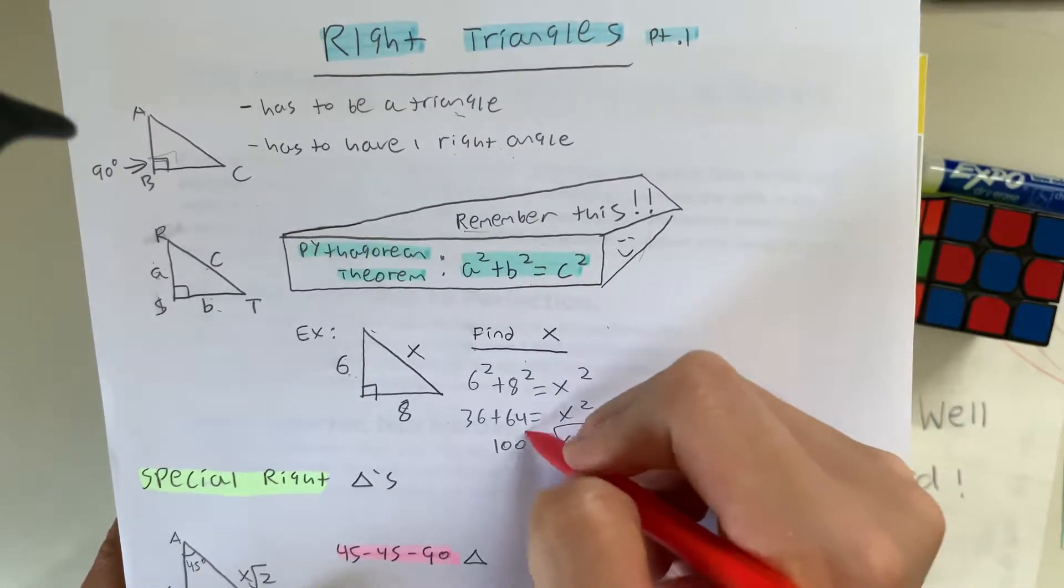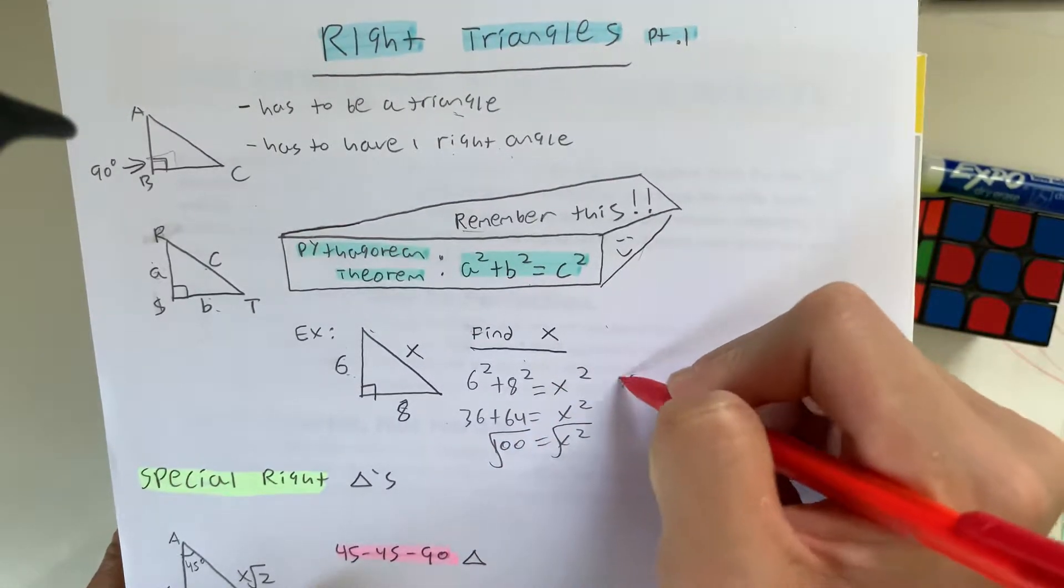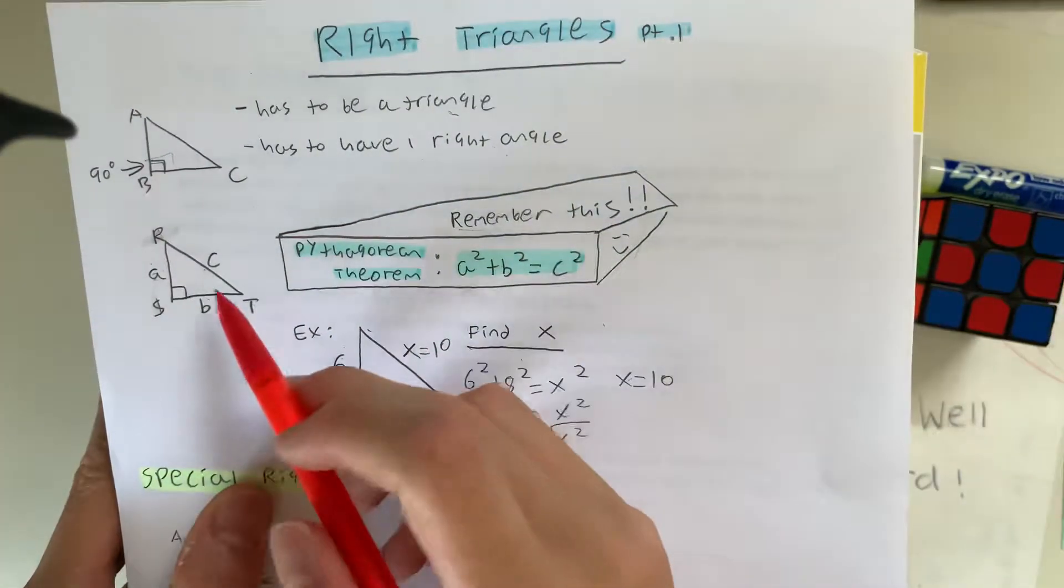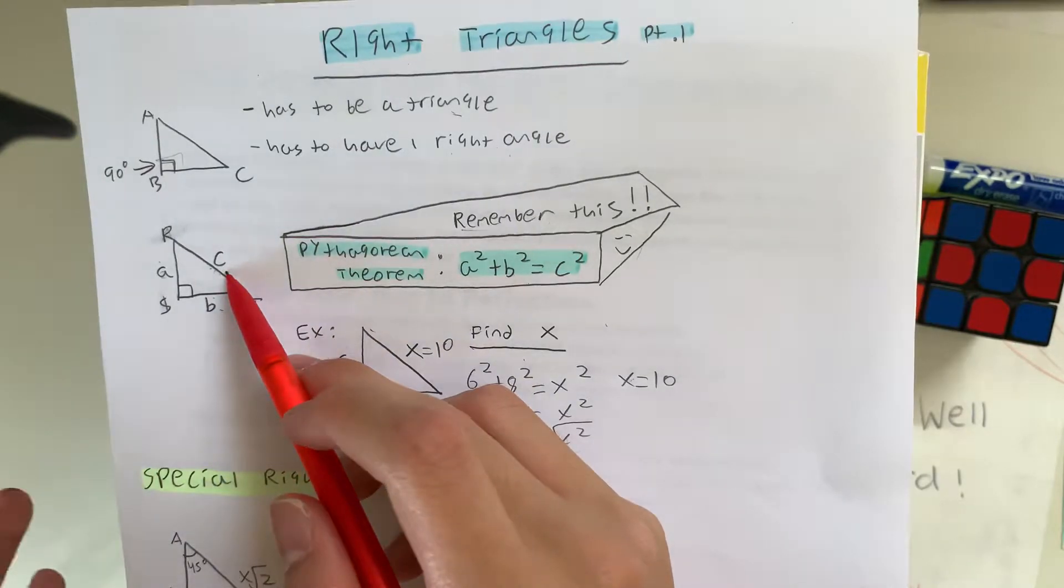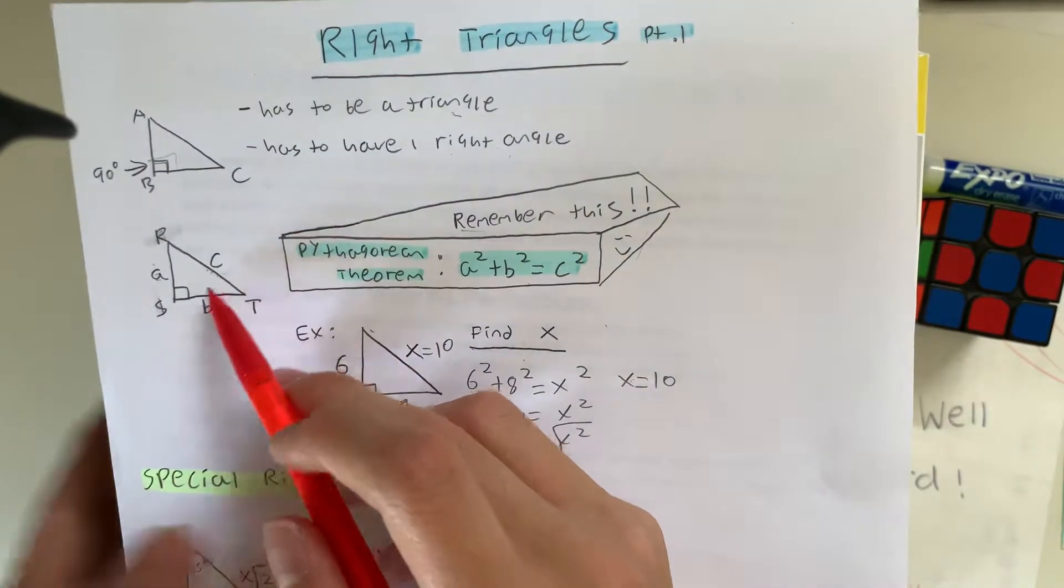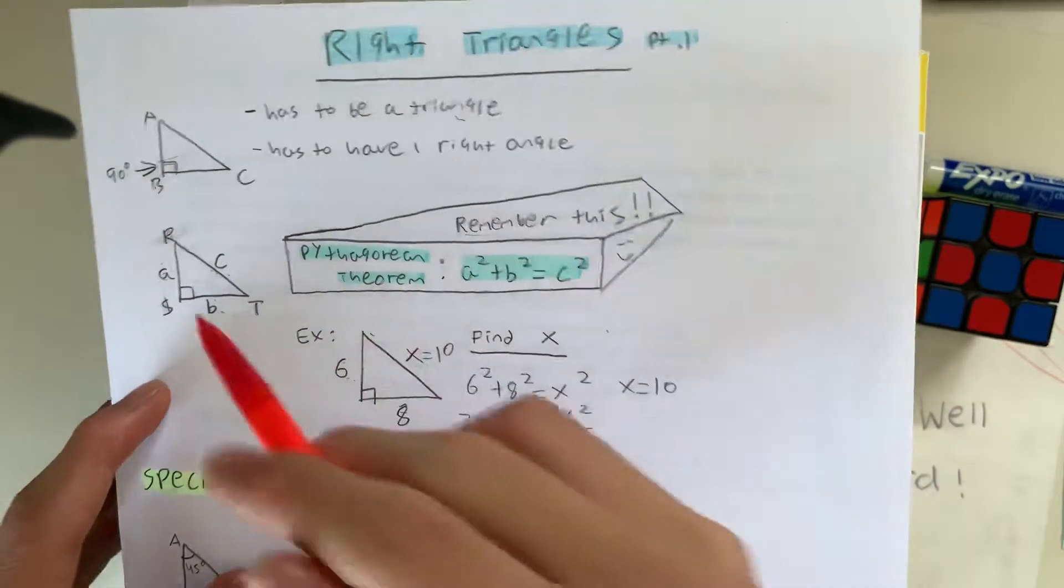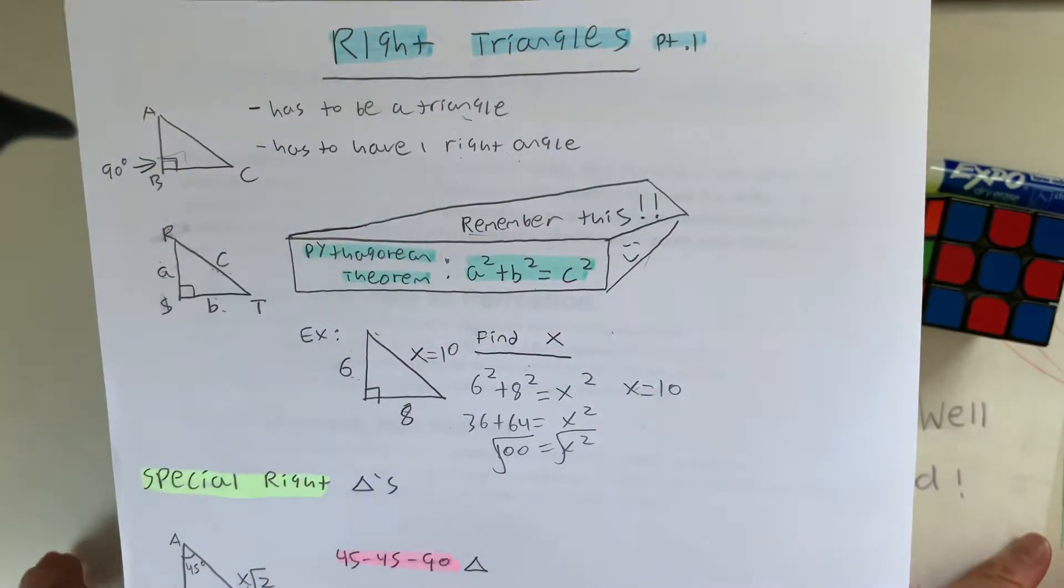And you can square root both sides, giving you the length of x is equal to 10. And know that c has to always represent the hypotenuse of the triangle, of the right triangle, and a and b are just the lengths of the legs. So this is how you're going to do it for right triangles.